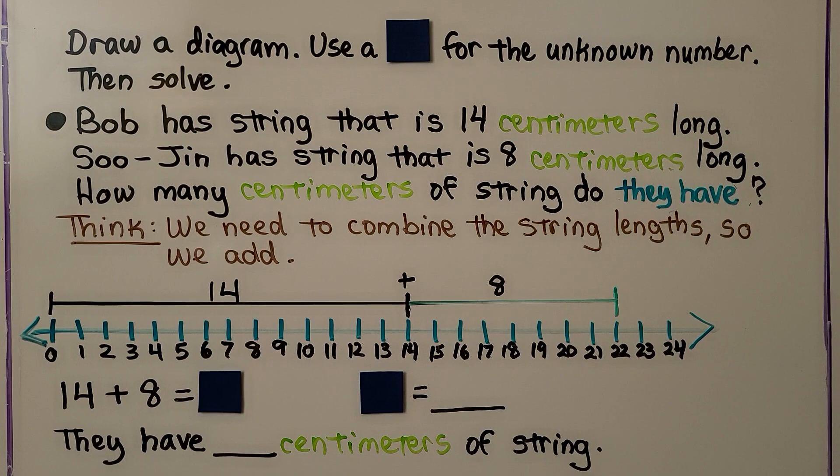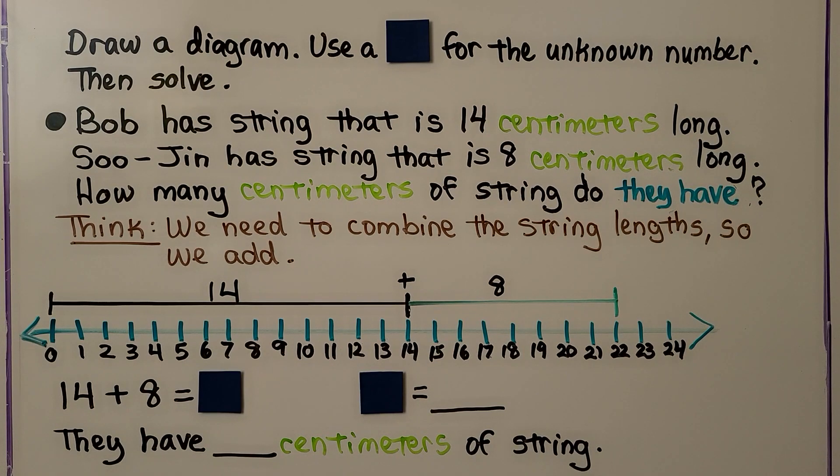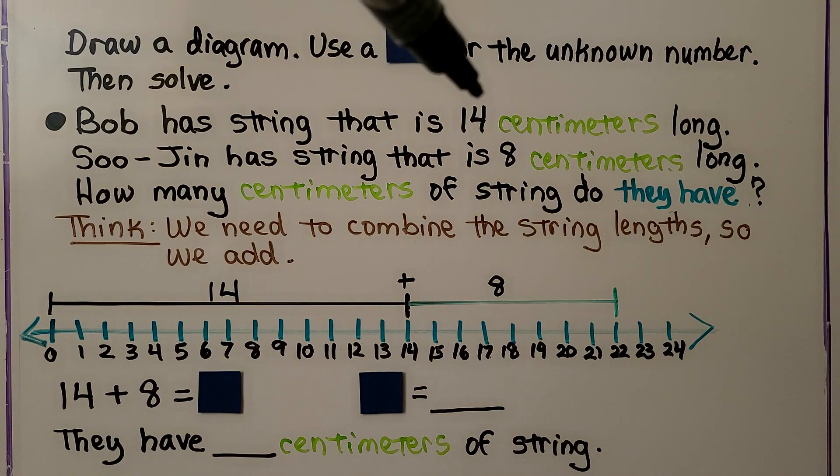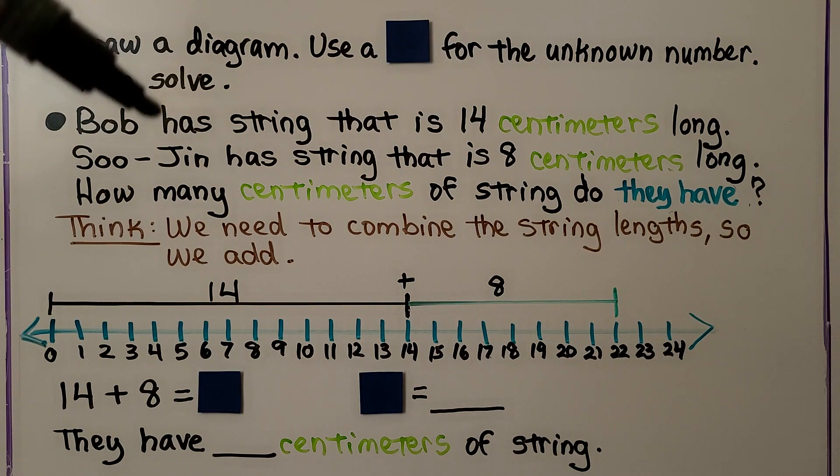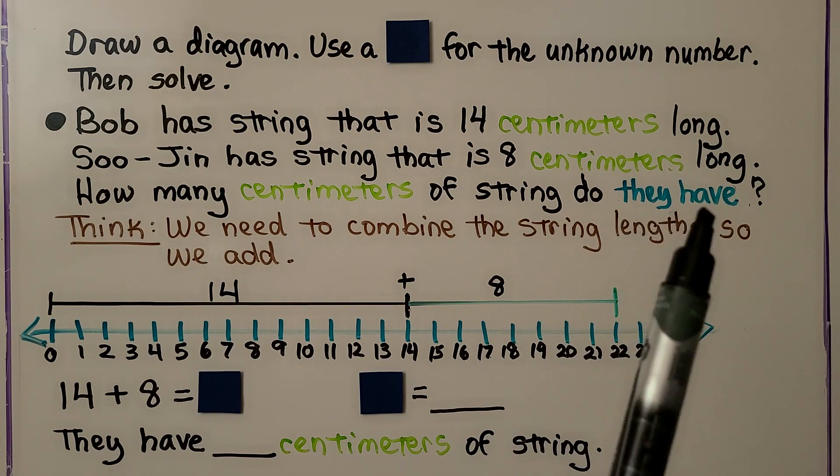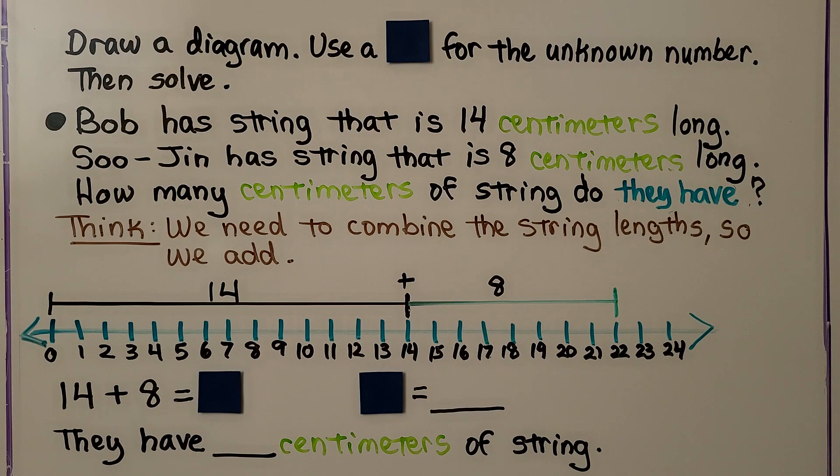Here it's telling us to draw a diagram, use a square for the unknown number, then solve. Bob has string that is 14 centimeters long. Sujin has string that is 8 centimeters long. How many centimeters of string do they have? So we need to find how many they have together. That means we need to combine the string lengths, so we add.